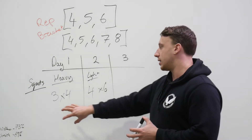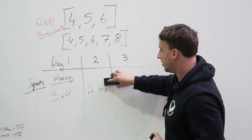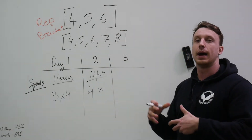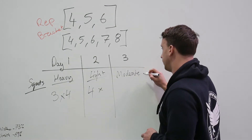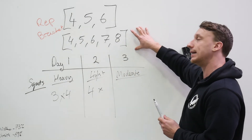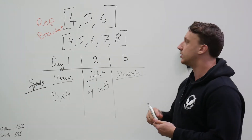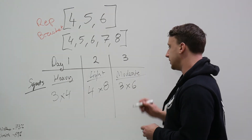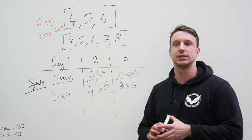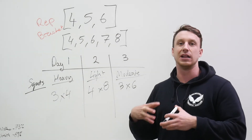Now we'll take it a step further and show how you can progress from two days to three days a week. We add on to the existing program by opening up a moderate day in between the heavy and the light day. We also open up our rep range to the five-rep bracket. Our light day sits at the higher end — four sets of eight. Our moderate day is in the middle of the bracket at three sets of six. And our heavy day remains three sets of four. So we have a high-intensity heavy day, and two volume days — one at moderate weight with three sets of six, and one lighter at four sets of eight.